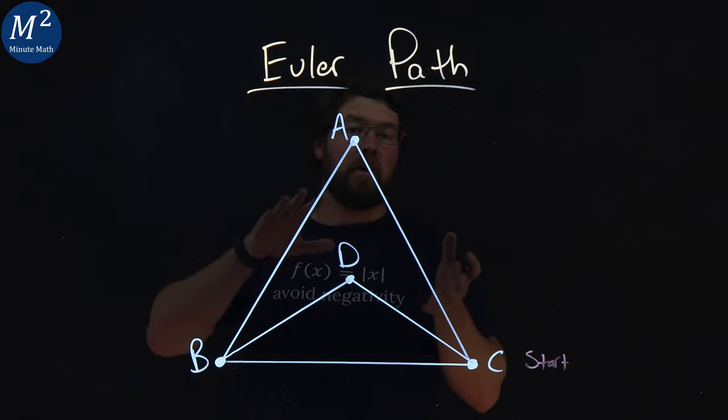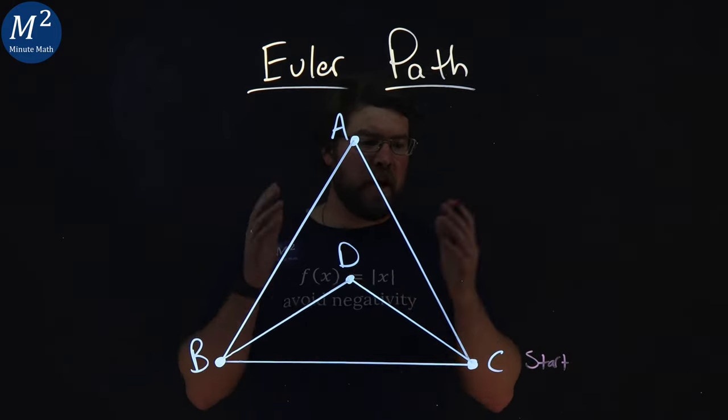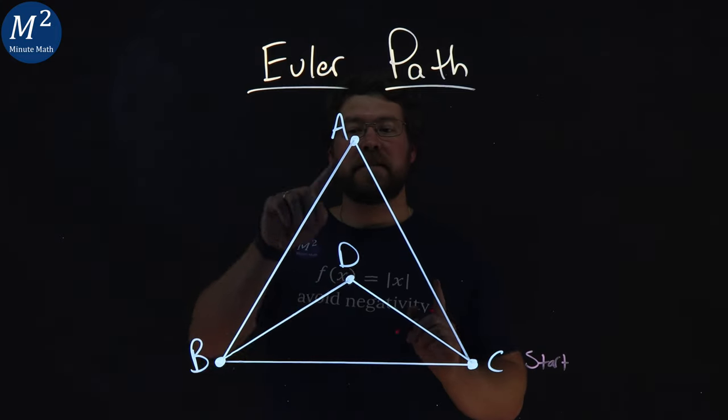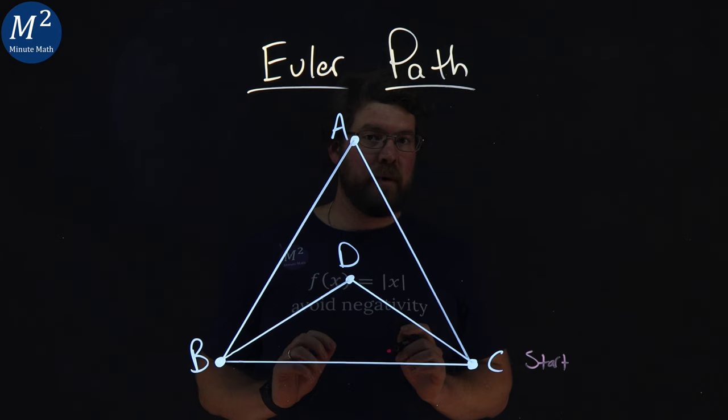There are many different Euler paths that can exist on a graph, but we're just going to find one of them here. Remember, we have to get every single edge without a repeat.